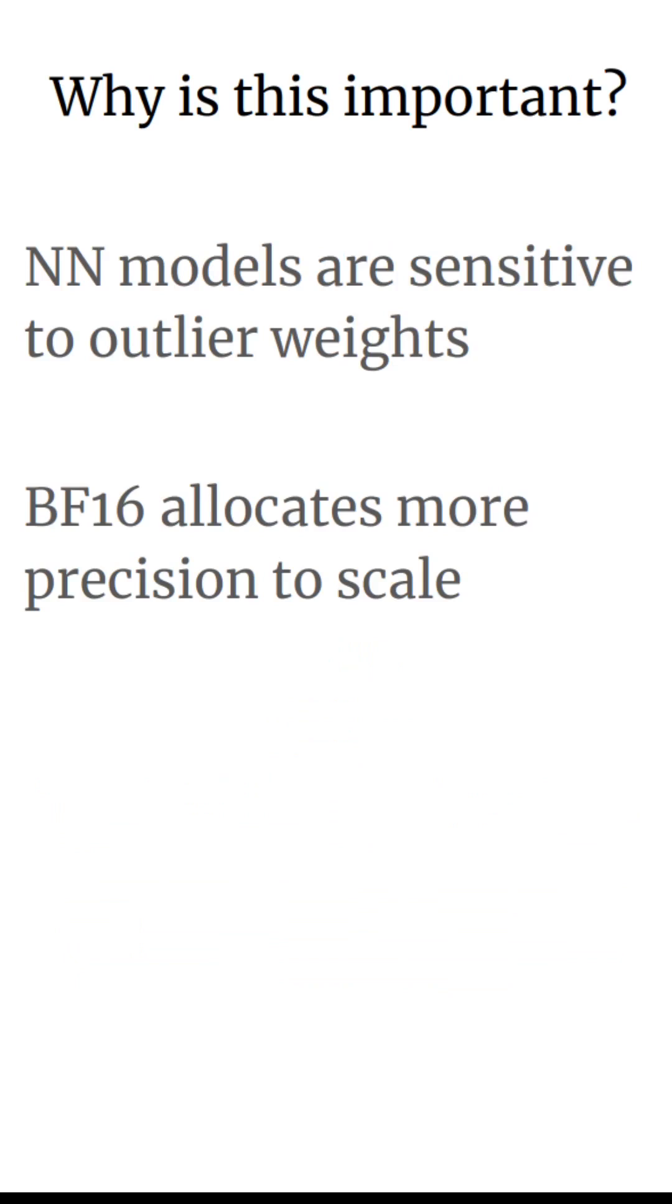The upside of this is that for neural network models, where some of your parameters may be extremely different in scale than the others, you'll have less problems using something like BF16 than FP16. By allocating more of the few bits we have actually available to the scale, we can actually train in a more stable manner.